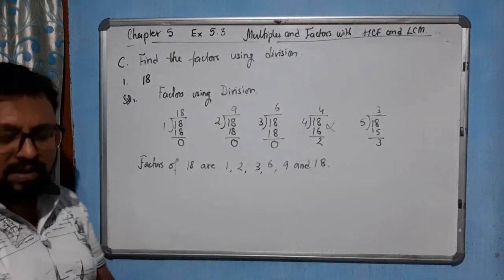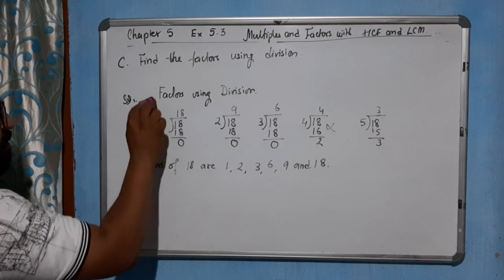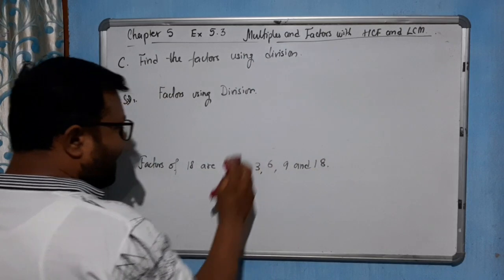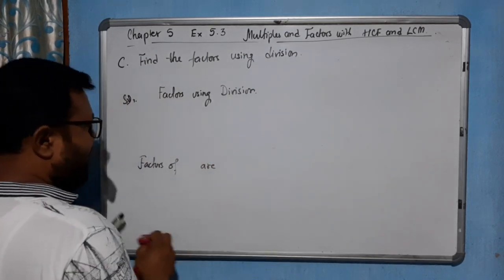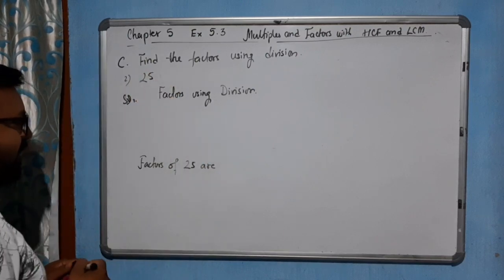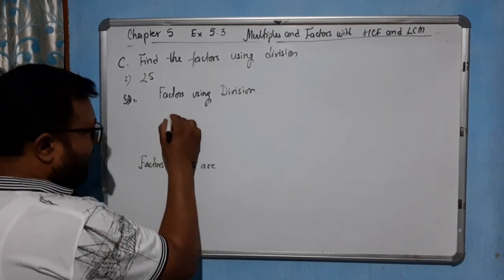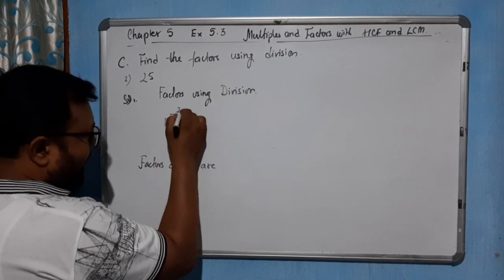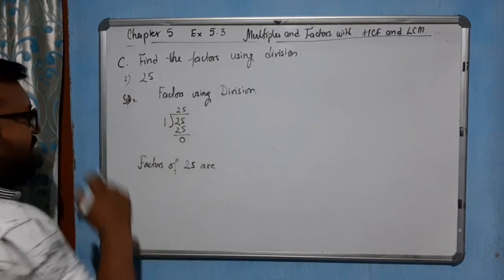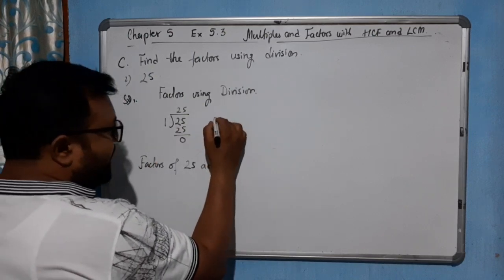Now let's try the next example — 25. We will find the factors of 25. Let's try by 1 first. 1 divides 25, remainder 0. So 1 and 25 are the first factor pair.